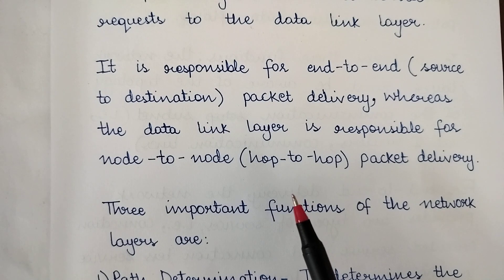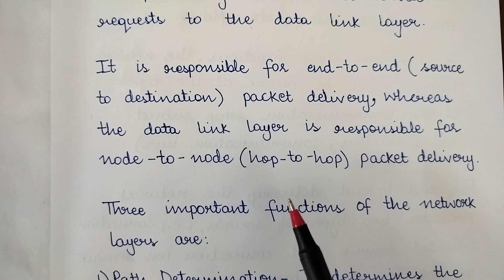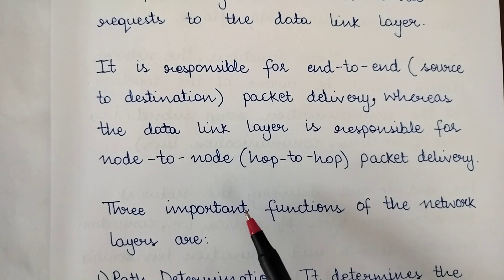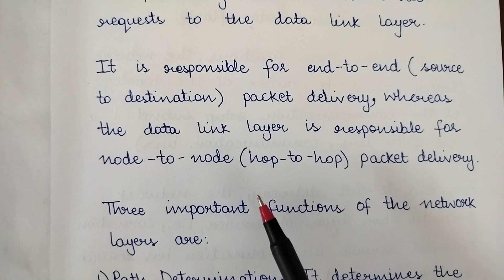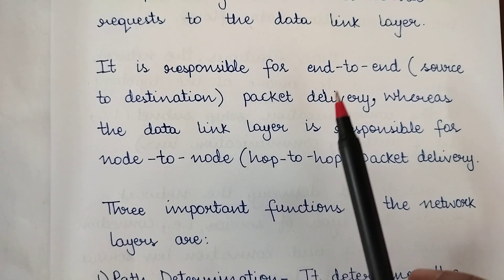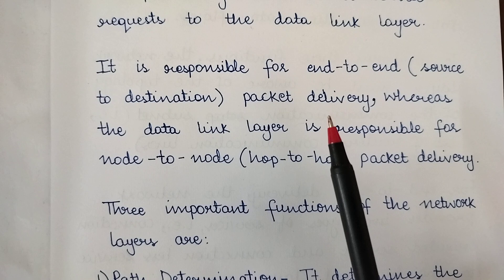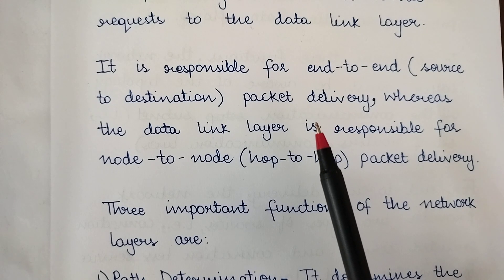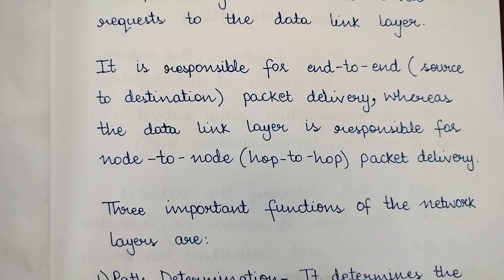There can be various nodes between the source node and the destination node. The data link layer is only responsible for packet delivery from one intermediate node to the other intermediate node. Whereas the network layer takes complete responsibility from the source node to the destination node for packet delivery.